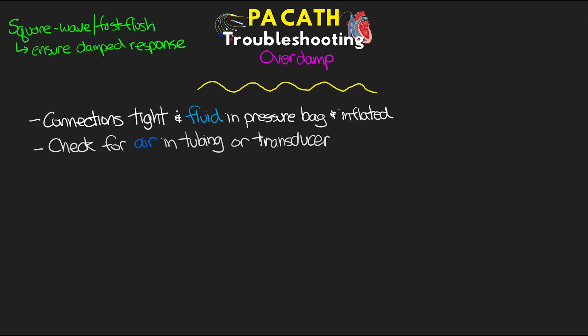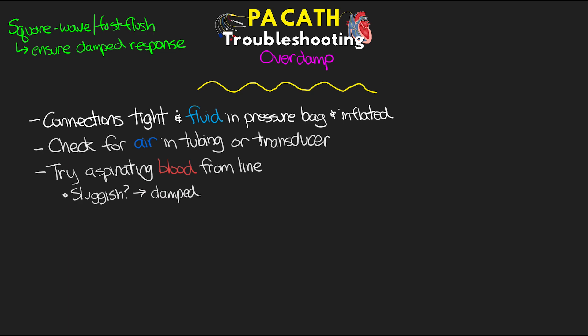If air is present anywhere before the final stopcock, simply turn the stopcock off to the patient and then fast flush the air out through the stopcock. If air is present after the last stopcock, you're going to need to aspirate blood back — this brings the air with it — before you fast flush the blood back in and clear the line. We also want to try aspirating blood from the line, as sluggish aspiration can lead to a damped waveform. A fast flush with the pressure tubing should be attempted, and a more forceful pulsating flush with a 10 mL syringe may be needed to clear whatever was causing the damping.